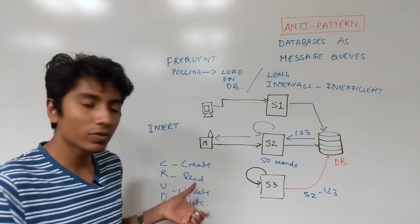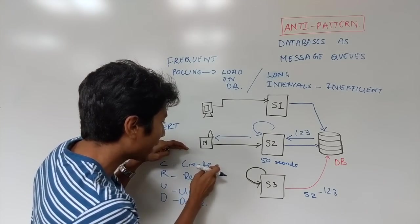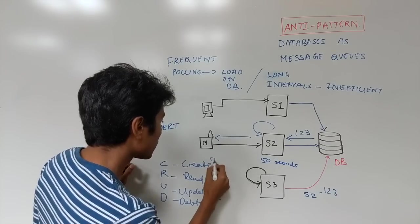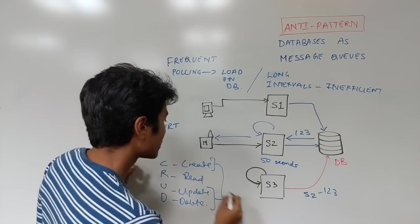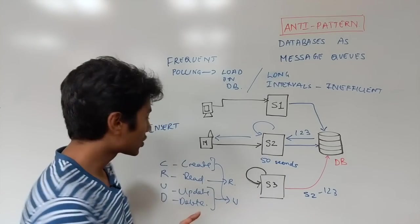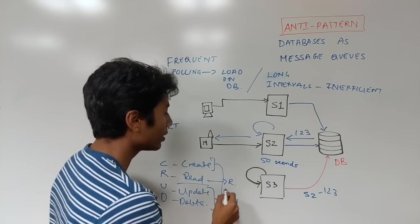In this CRUD model, what we do is we study how much time do each of these operations take. And databases, these are write operations, and this is a read operation. They are rarely designed such that the read and write will both be fast.